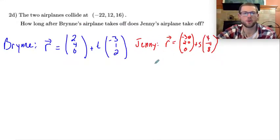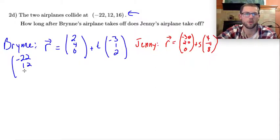Here I've got the two vector equations for both of these planes, and what I want to do is find out how long it takes for each plane to reach this position right here. So I can think of this position vector, negative 22, 12, 16,